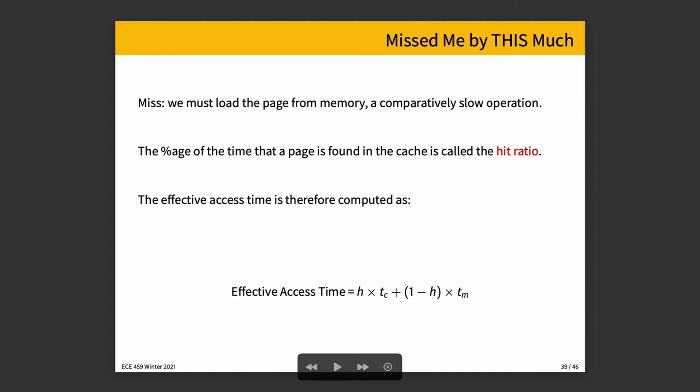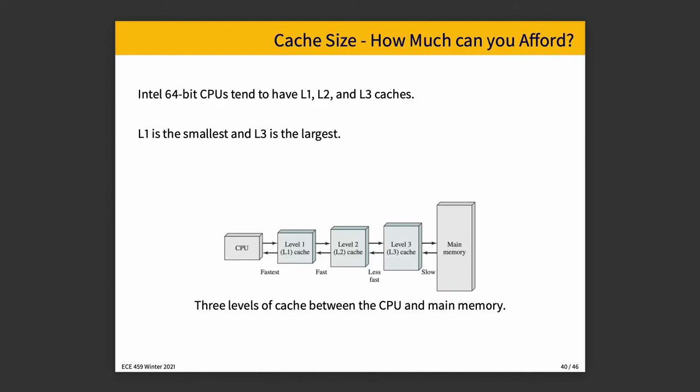The effective access time formula is: h (the hit ratio — what percentage of the time we successfully find what we need in the cache, as a fraction between 0 and 1) times Tc (the time required to load a page from cache), plus one minus h (when we miss) times Tm (the time required to get it from memory). Obviously we want the hit ratio to be as high as possible; in the ideal situation we never miss, though that's unrealistic.